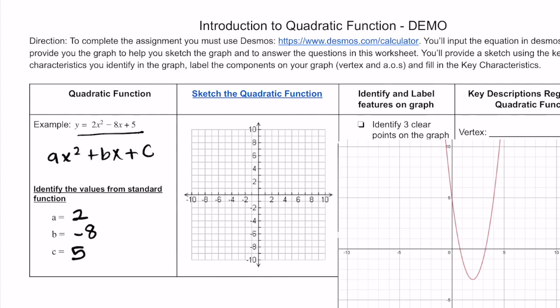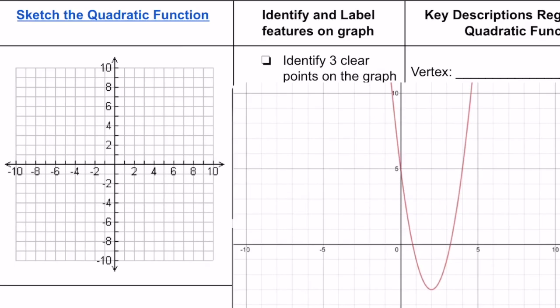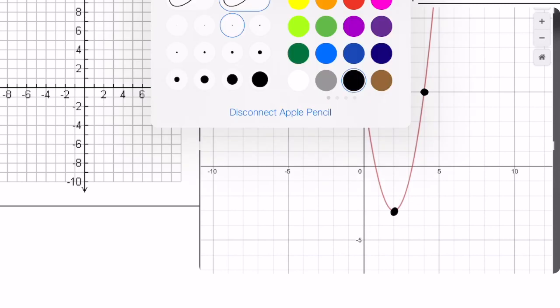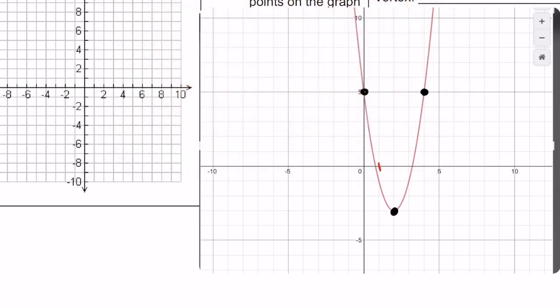Then we're going to have to sketch the function, but to do that we want to be able to identify the three clear points. So by looking at our graph, we see a clear point is right here, another clear point is right there and right here. And if you want to help guide you to find the points, you could just label the points. This is 1, 2, 3, 4, 5.